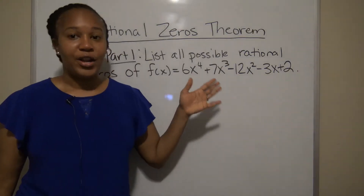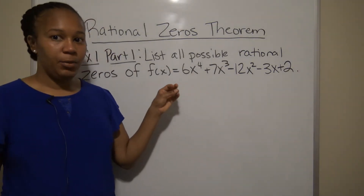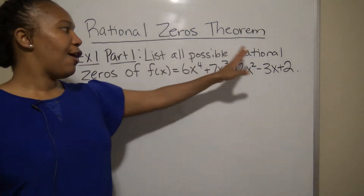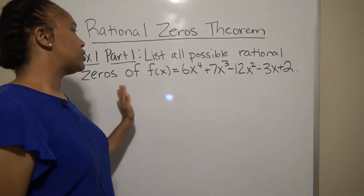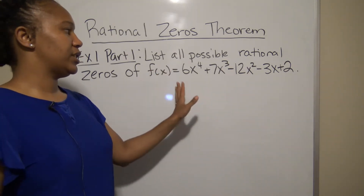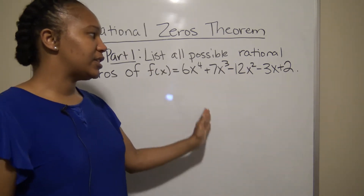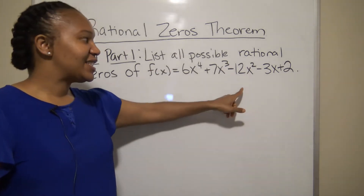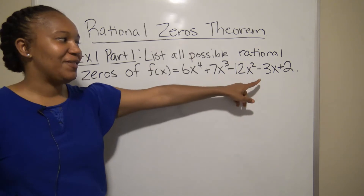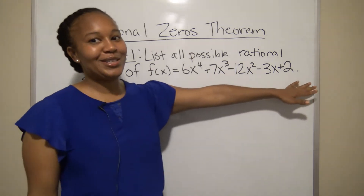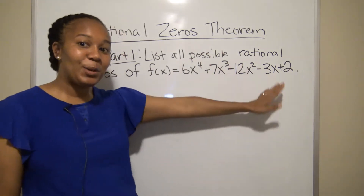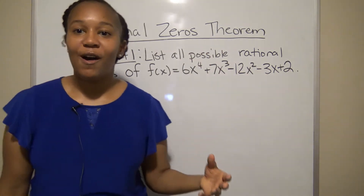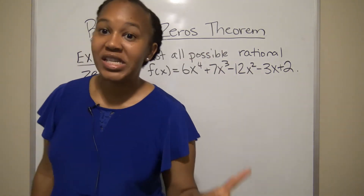Let's look at an example. For this first example, we want to list all the possible rational zeros of f(x) = 6x⁴ + 7x³ - 12x² - 3x + 2. We'll first find all possible zeros, and then in part two we'll figure out which ones are actually zeros.